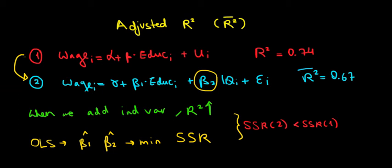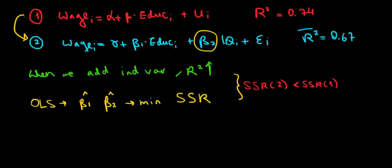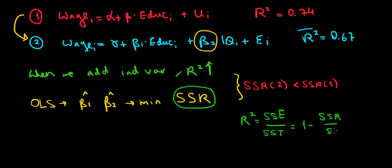Recall, to prove this mathematically: R-squared equals the sum of squared differences explained by the model relative to the total sum of squared differences. This is the same as 1 minus the sum of squared differences unexplained by the model—in other words, the sum of squared residuals, since residuals are what we cannot explain. So it's 1 minus SSR divided by SST.